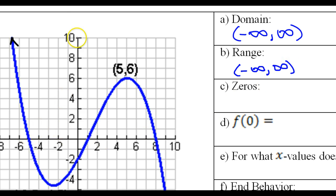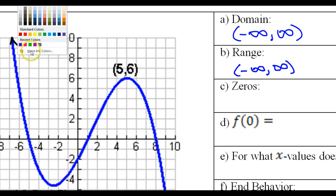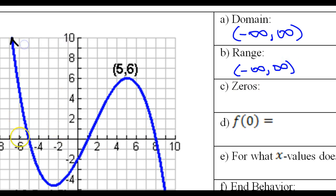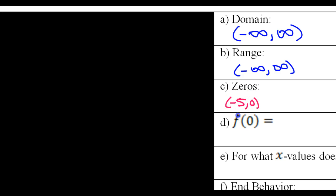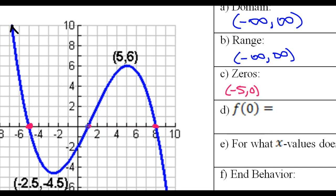The zeros are the x-intercepts. So these are the zeros here, here, and here. That's why the zeros are negative 5 comma 0, 1 comma 0, and 8 comma 0.